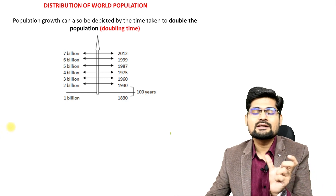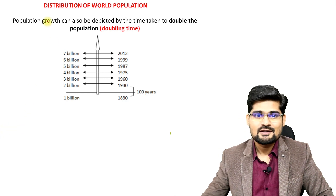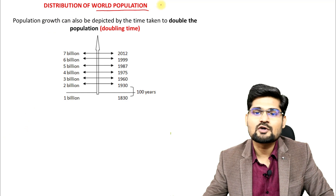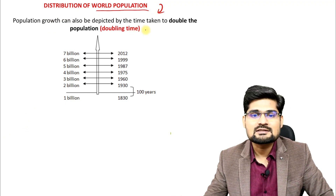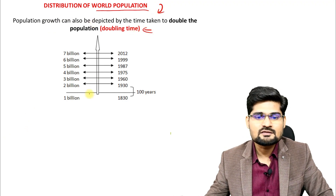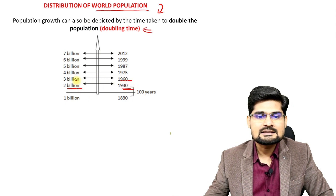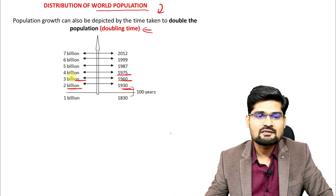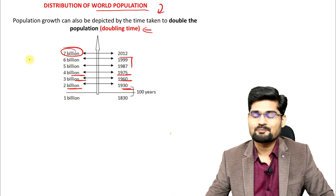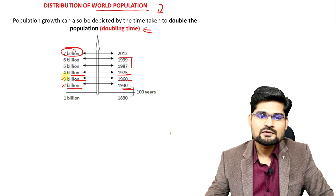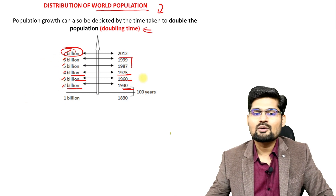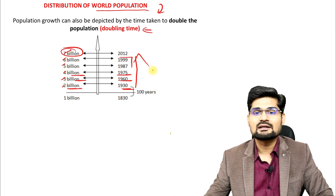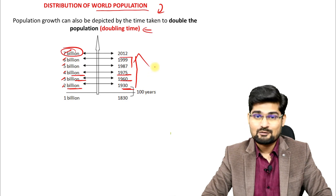There is something called the doubling time of population growth. In 1930 it was 2 billion; in 1960, 3 billion; in 1975, 4 billion; and by 2012, 7 billion. Observing the progression from 2 to 3 to 4 to 5 to 6 to 7 billion and how many years in between — this is what we look into as the doubling time of population.